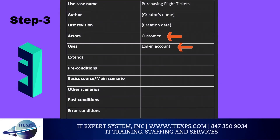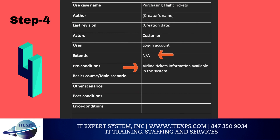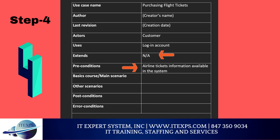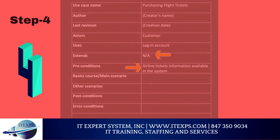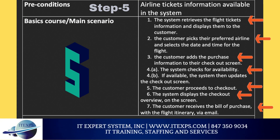Moving on to actors — here we put the actor that is interacting with all the use cases, which is the customer as we know from our use case diagram. The 'uses' field basically means include sequence, indicating what use cases are included. As seen in our diagram, it is the login account, since it needs to happen before a flight ticket is purchased. Looking at the extend field — since the only two extend relationships in our diagram were regarding payment, we can either leave it empty or put nil. For preconditions, we'll input the most relevant one: airline tickets information is available in the system, since without that information it would be logically impossible to purchase flight tickets.